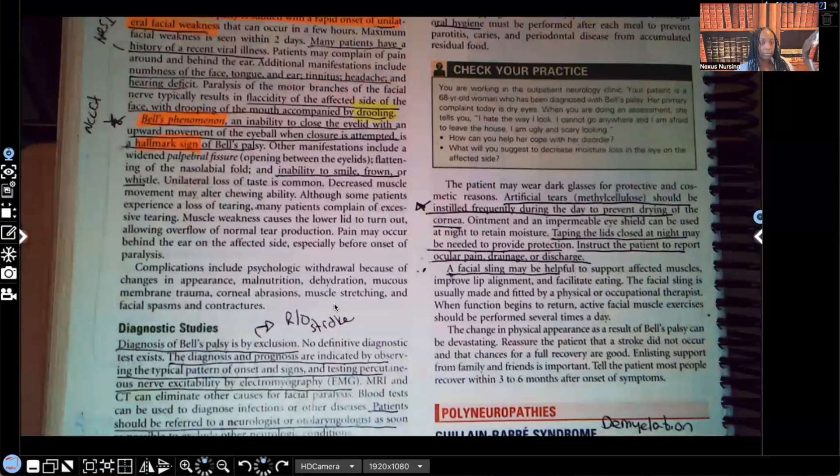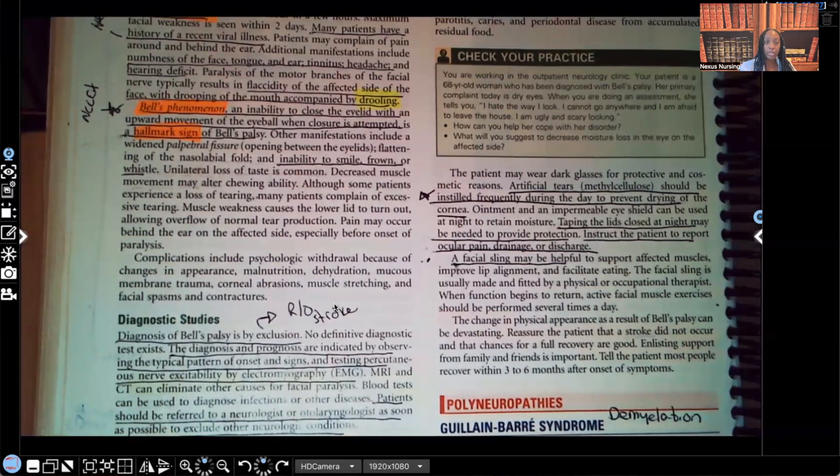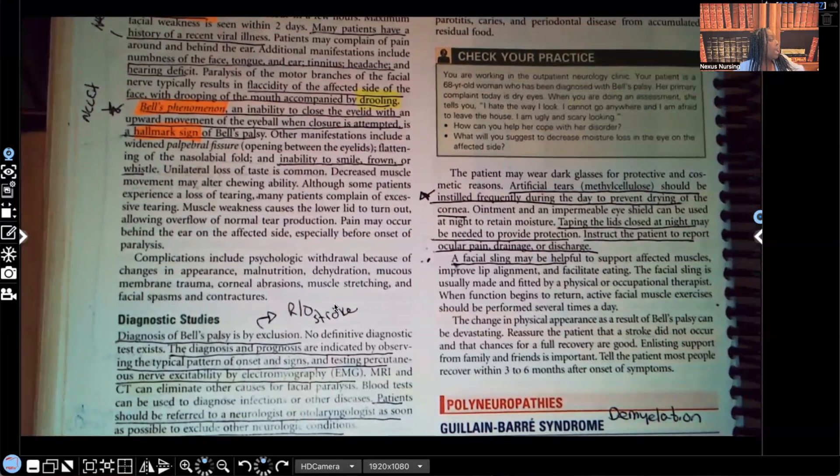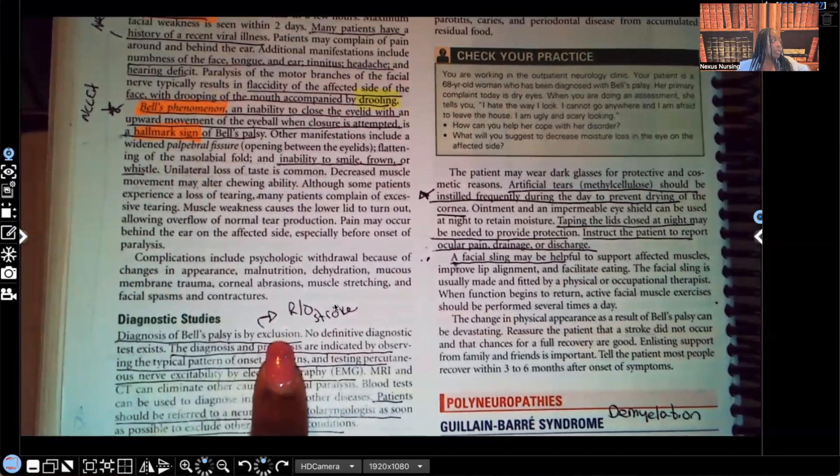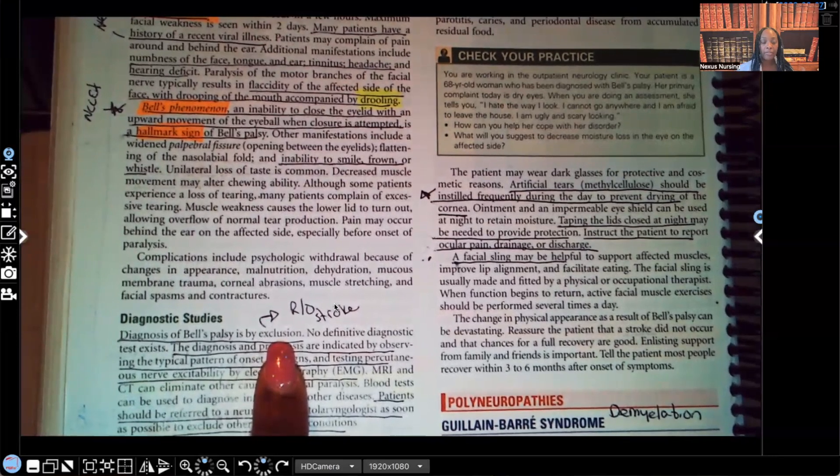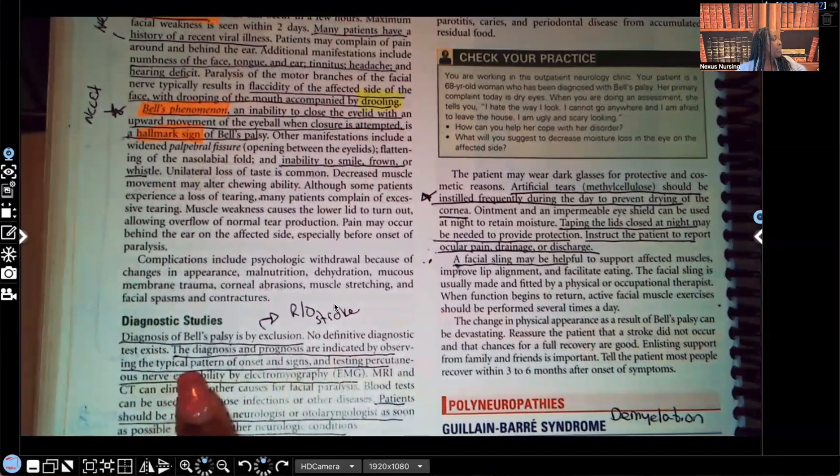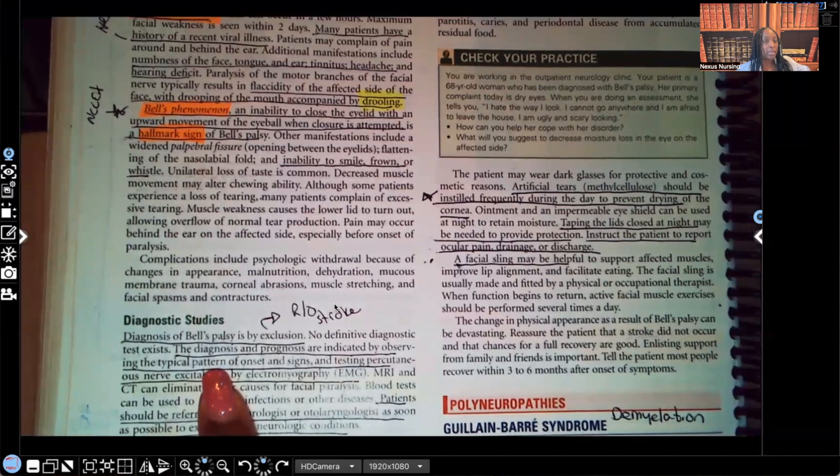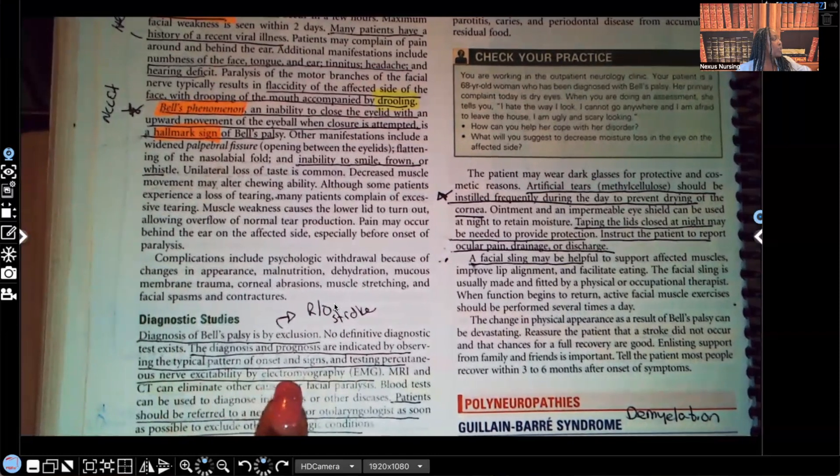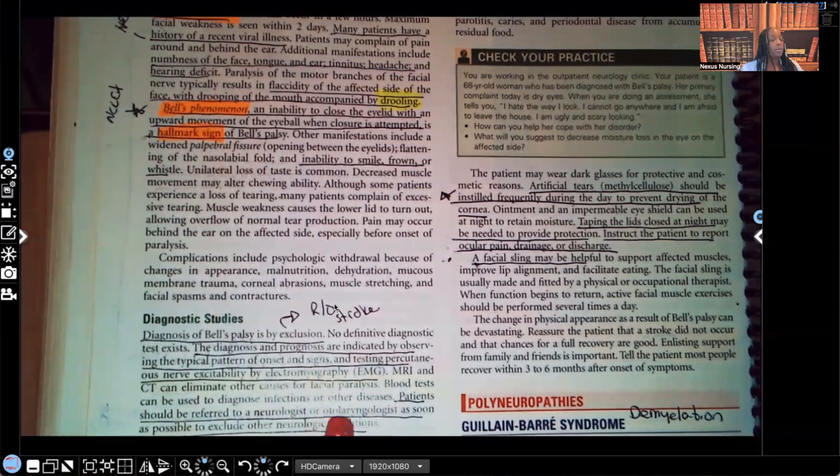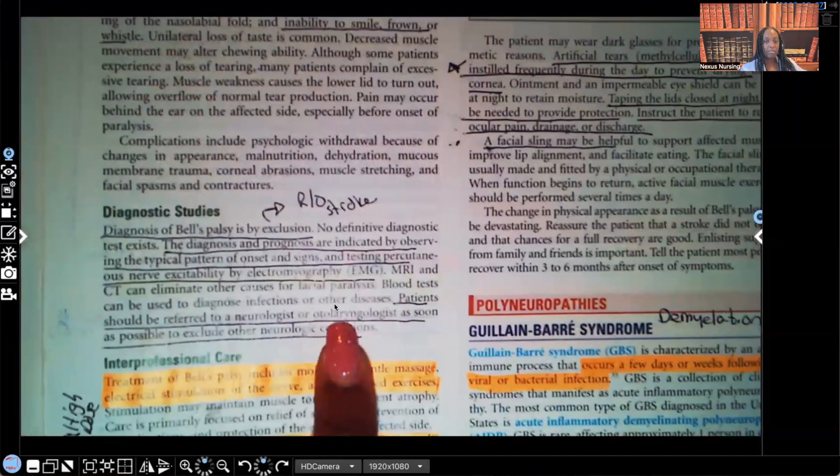Diagnostic studies. And you see what I wrote here, rule out stroke. Why? Because their symptoms are so close to a stroke, we want to make sure that it's not a stroke and something else. So we're going to rule out stroke. Diagnosis of Bell's palsy is by exclusion, excluding everything else out, starting with a stroke. There's no definitive diagnostic test that exists for Bell's palsy. We have to rule other things out. The diagnosis and prognosis are indicated by observing the typical pattern of onset and signs, testing percutaneous nerve excitability by electromyography, that's an EMG. Patients should be referred to a neurologist or otolaryngologist. That's specialist.